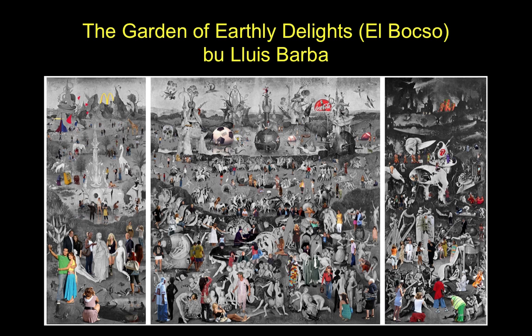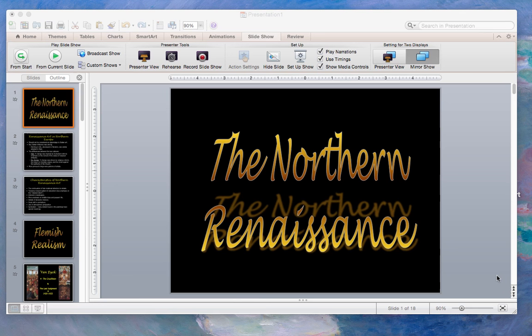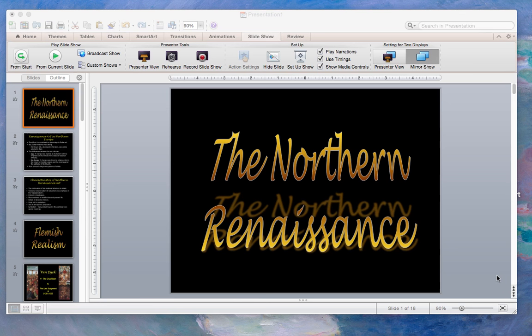Our project is going to deal with a lot of these details and cramming things into a piece of paper — that's why you had to create a list of 100 objects. We're going to use those objects in a drawing that will look similar but not the same as Bosch's Garden of Earthly Delights, and very much like the Northern Renaissance artists.